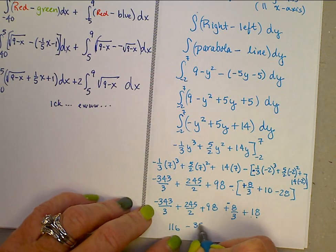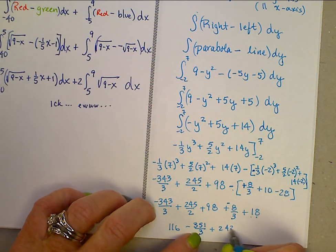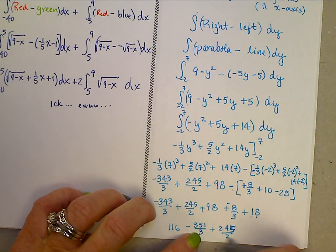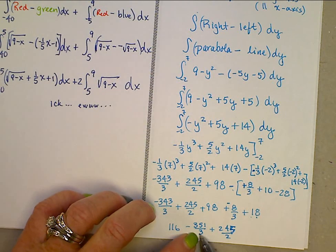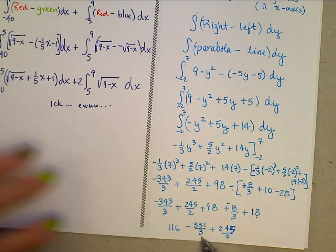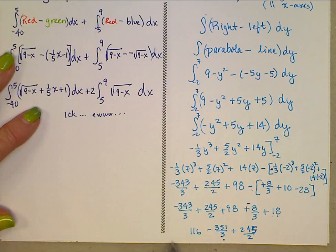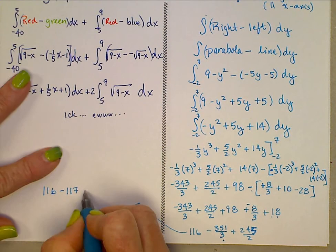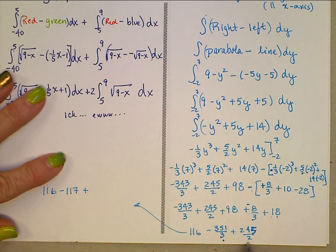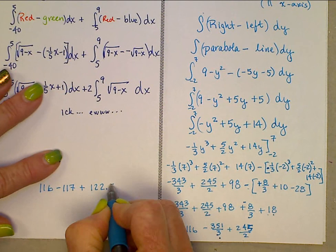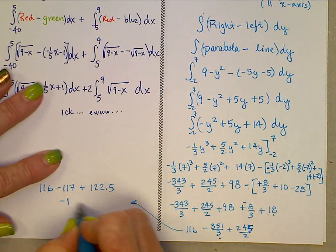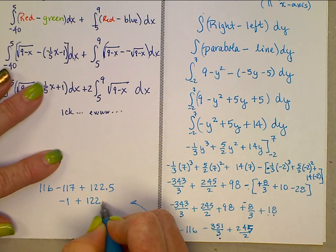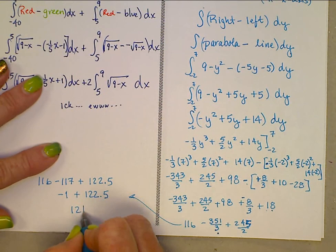So we have 116 minus 117 plus 245 over 2, that's 122 and a half. So we have negative 1 plus 122.5, which gives us 121.5.